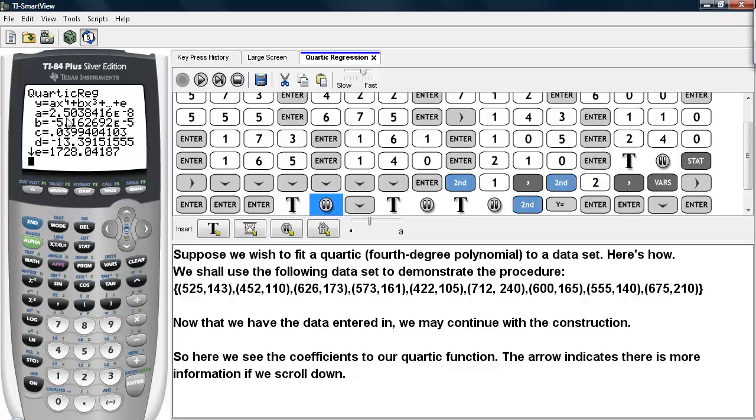The coefficient of X cubed is B, negative 5.16 about, times 10 to the negative 5. And then C is given here, D is given here, and E, the constant, is given here.